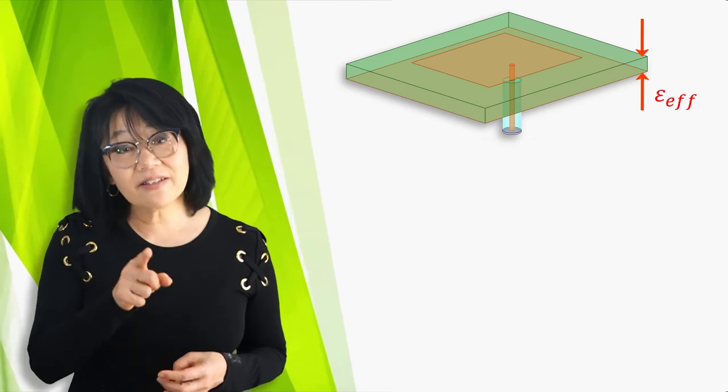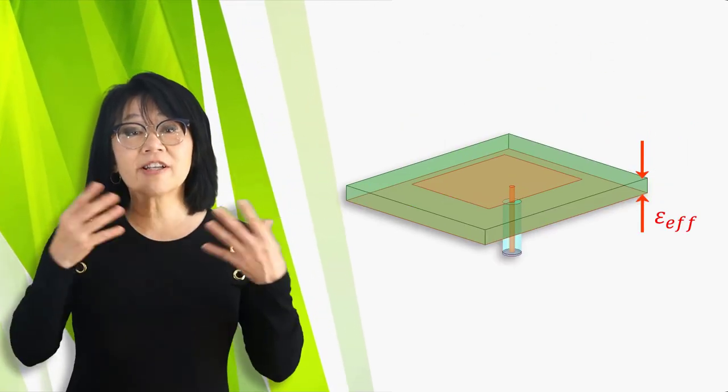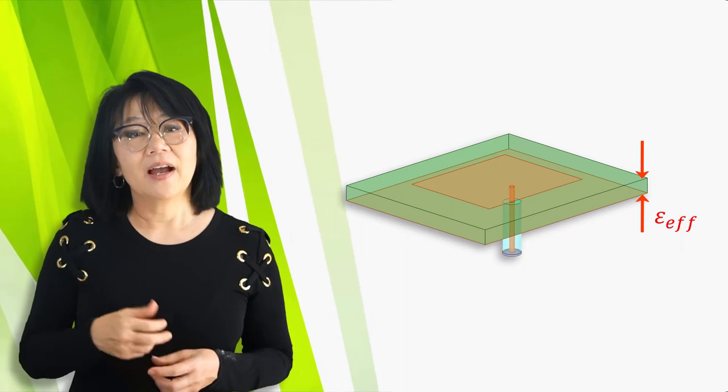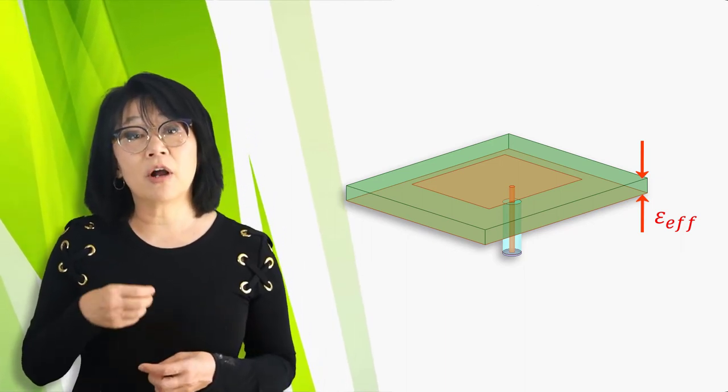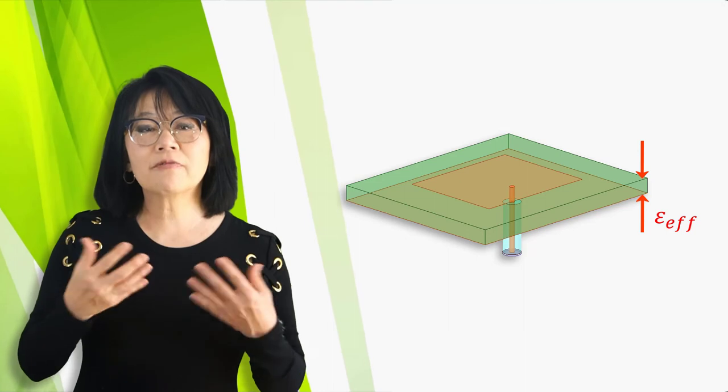But this configuration tends to be a large antenna size. The lower the material epsilon are, the more fringing, so there's more radiation.